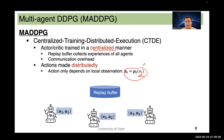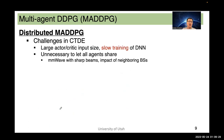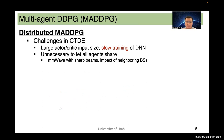MADDPG still has challenges when there is a large number of agents, because the Q function of each agent depends on the actions and observations of all agents, making the input size to the actor and critic networks very large and training slow. Furthermore, it is unnecessary to let all agents share information. For example, in our millimeter wave power allocation task, if two base stations are very far from each other, there will be little interference between them — meaning one base station has negligible impact on the state transition of the other, so sharing information between them is unnecessary.